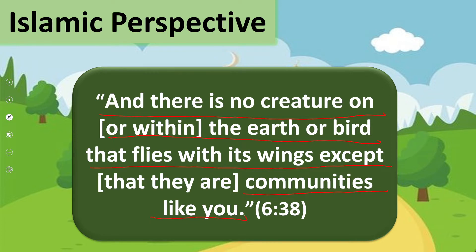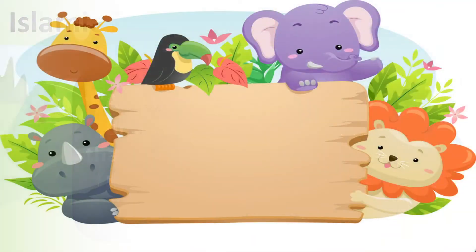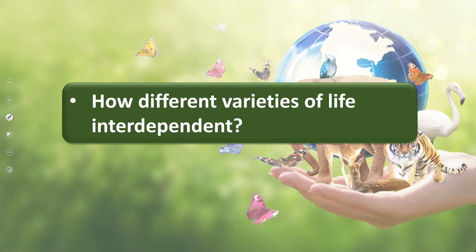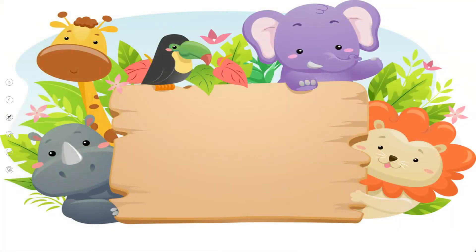Now let's move forward to the pre-reading question. How are different varieties of life interdependent? Plants depend on other plants; animals depend on plants; different animals depend on other animals for food. Even human beings depend on plants — we get oxygen from plants, we get food from them. This is how we depend on each other, and this is called interdependence.